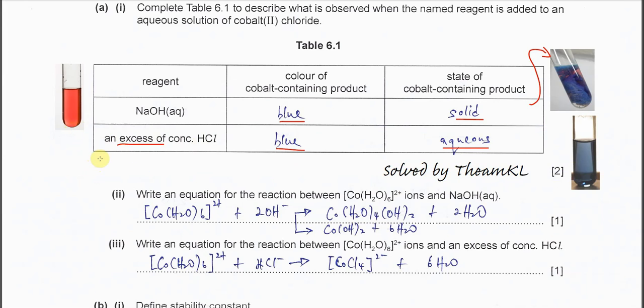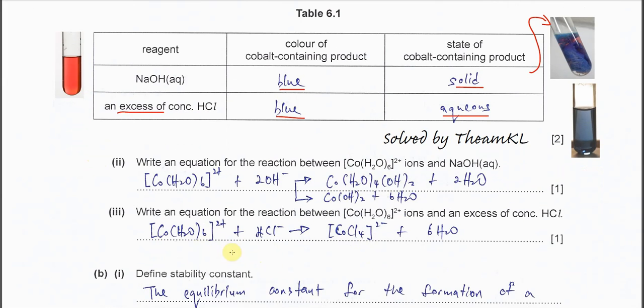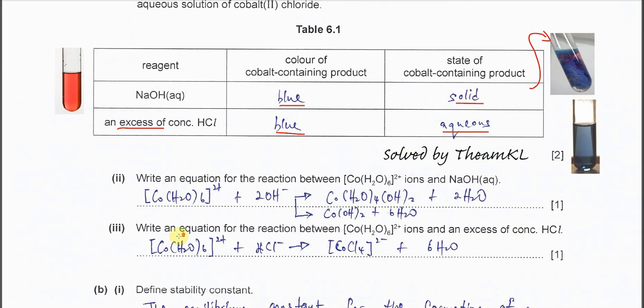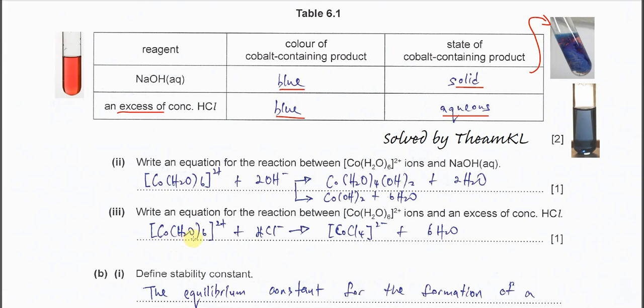It's a solution, not precipitate. It's a clear solution with no precipitate. Follow this equation: the hexa aqua cobalt-2 ion with four chloride forms tetrachloro cobalt ion and six H2O. This one is soluble and is a solution.